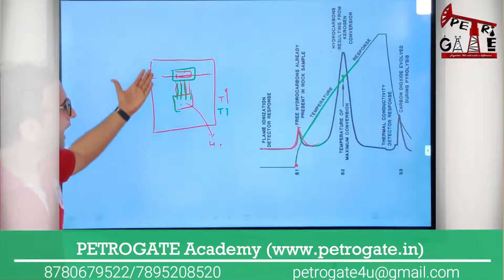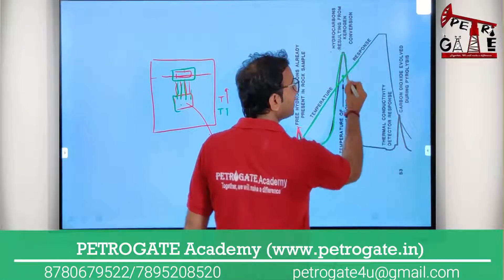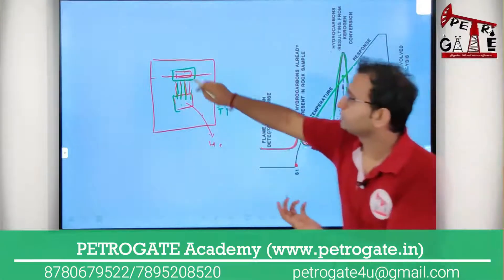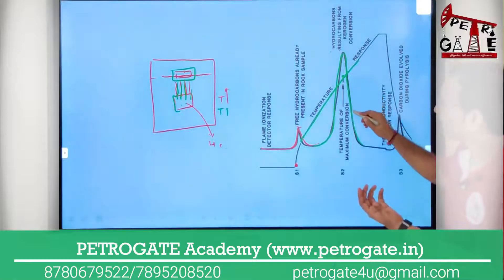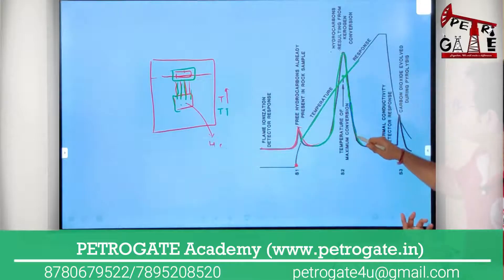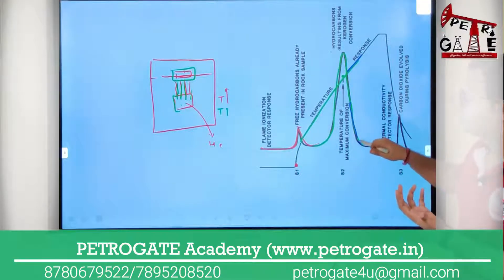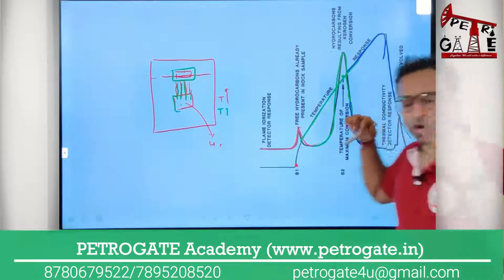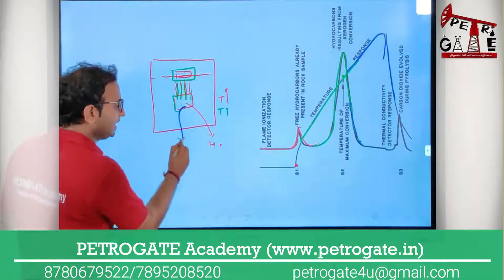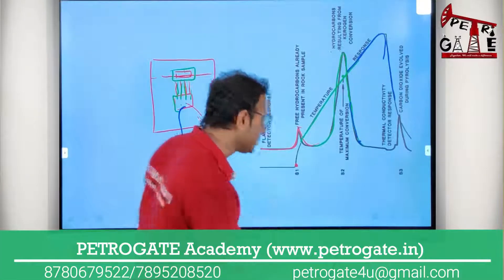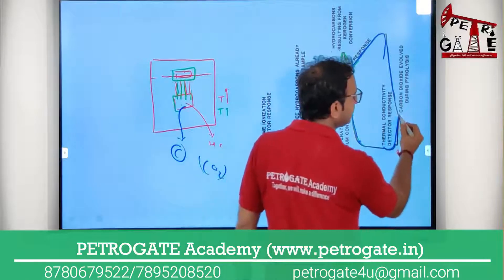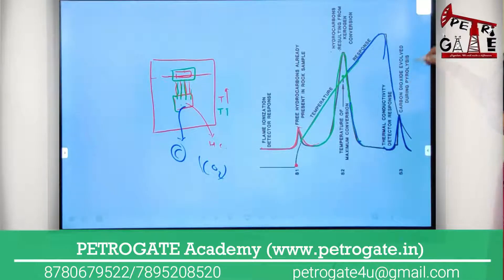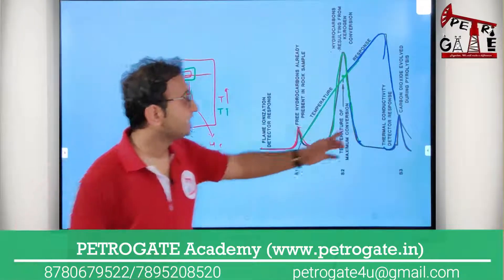At higher temperature, a larger amount of hydrocarbon is released and recorded as a higher peak — the S2 peak. As the peak reduces, meaning all hydrocarbon from the kerogen has been released, I then decrease the temperature. At the end, the remaining carbon is released as CO2, producing a third peak representing the amount of CO2 evolved during the pyrolysis.